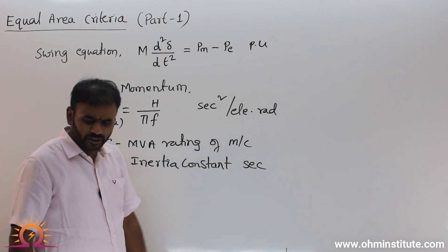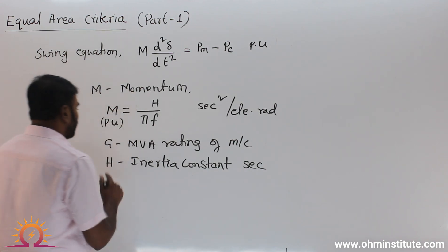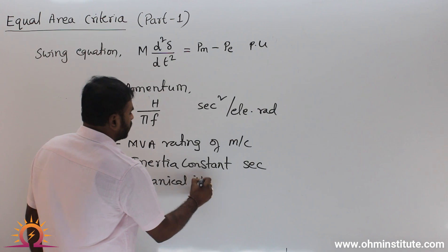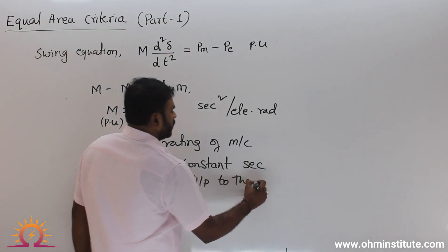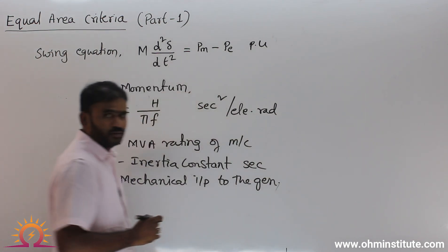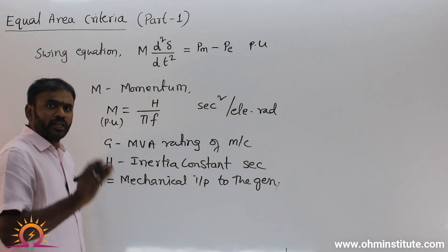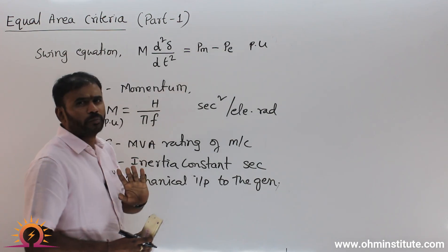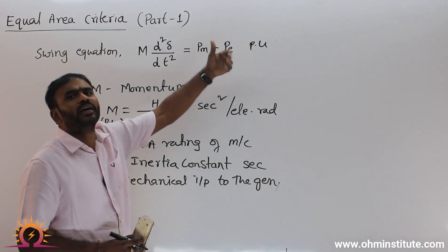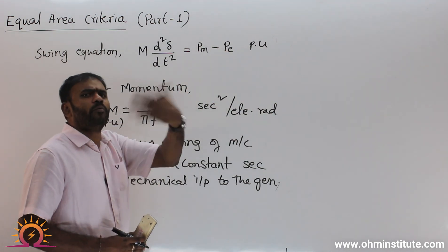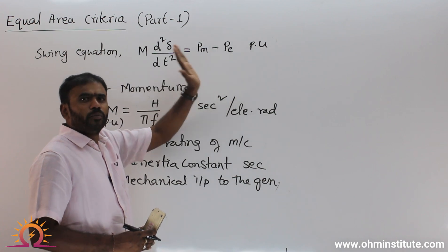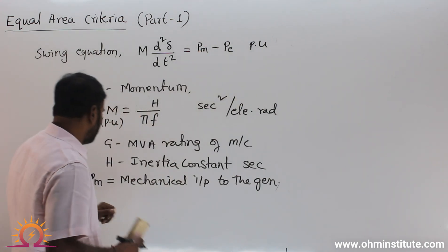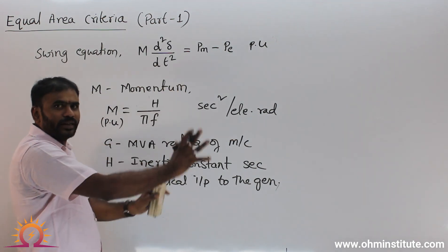What are Pm and Pe? Pm is the mechanical input to the generator and Pe is the electrical power output of the generator. By default, the swing equation here is for a generator, not a motor. For a generator it is Pm minus Pe. For a motor, the input is electrical and output is mechanical, so it is Pe minus Pm. Generalized: input power minus output power.